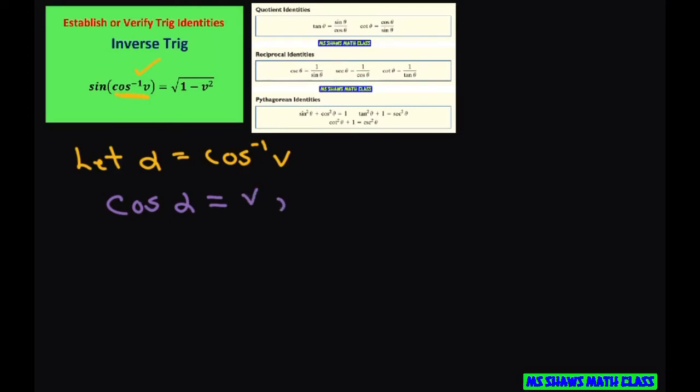And that's with our restrictions that alpha has to be in between 0 and pi or in quadrants 1 and 2.